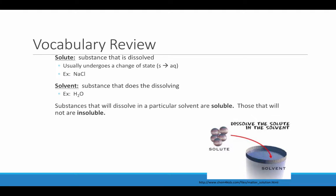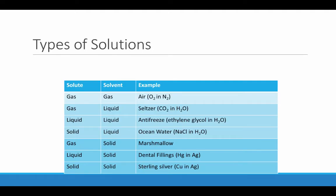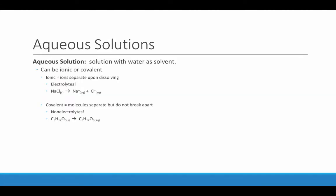A substance that will dissolve in a particular solvent is said to be soluble, while those that will not are insoluble. While we've looked almost exclusively at solutions of solid dissolved in liquids in this class, consider the fact that solutions can be all kinds of different combinations of phases, from gas to gas as with air, to solid to solid as with alloys like sterling silver. However, in this class we've focused only on aqueous solutions.